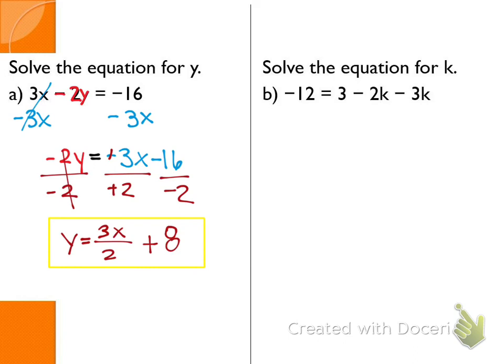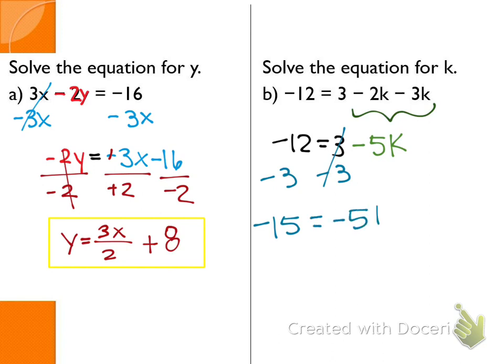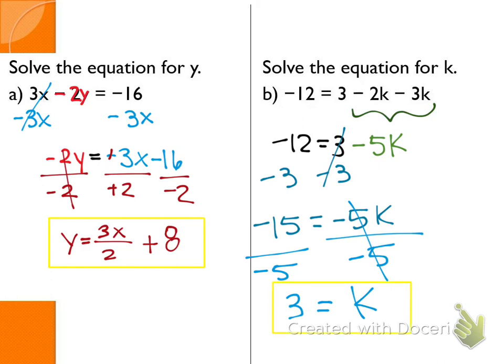Letter B: solve for K. It doesn't say 'justify each step.' First step: combine like terms — leaving negative 12 and 3 alone, negative 2 minus 3K is negative 5K. Next step: 3 minus 12 minus 3 equals negative 15 equals negative 5K. Last step: divide by negative 5 — K equals 3. You can flip it from 3 equals K to K equals 3 if you like. That is where we will end today.